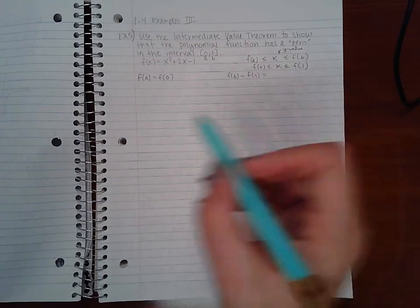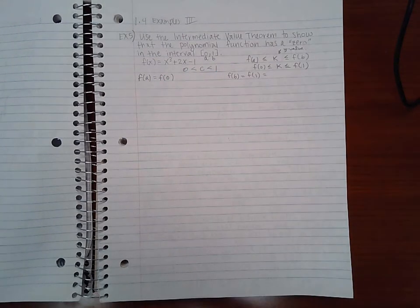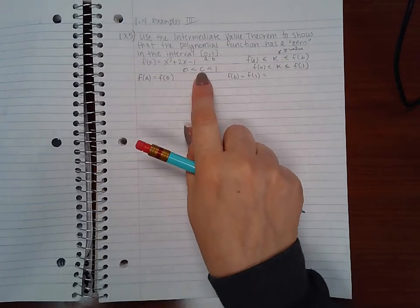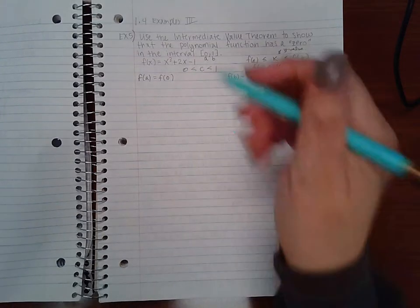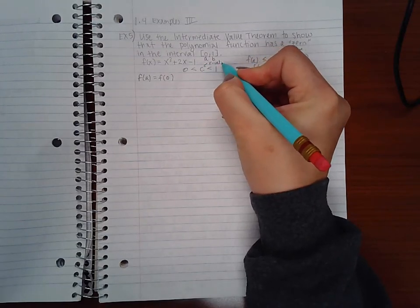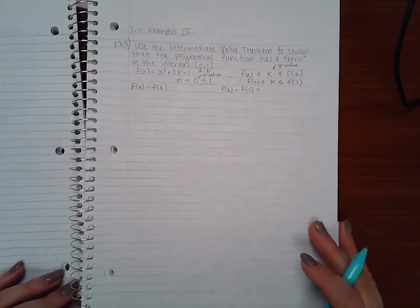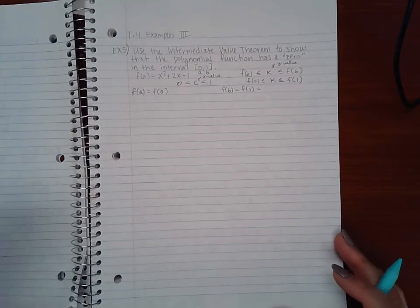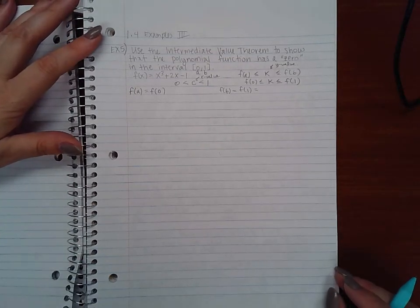So remember c is going to be in the interval, so that means 0, c, and 1. c will be in the interval. Now we don't know if this exists just yet. This is an x value here. We want to show the premise of the Intermediate Value Theorem before we can actually conclude what the Intermediate Value Theorem is telling us.